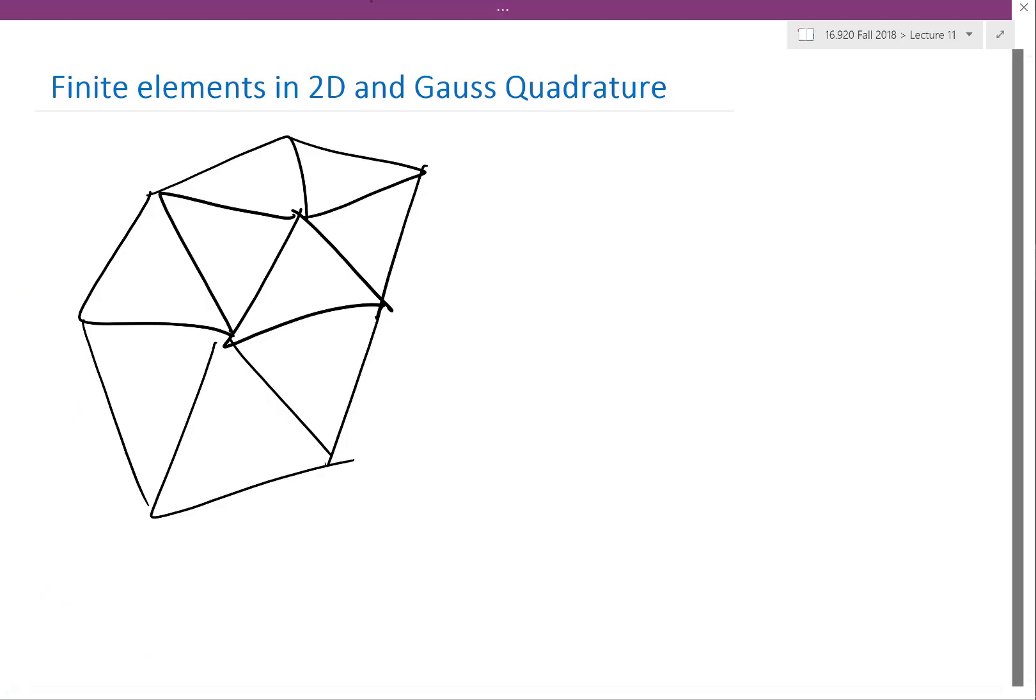So how do you define the space, finite dimensional space, in a piecewise triangular element?